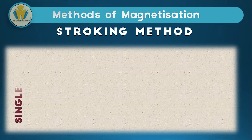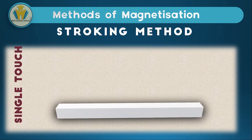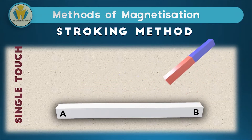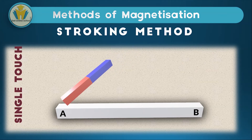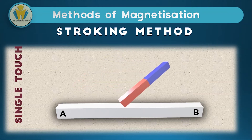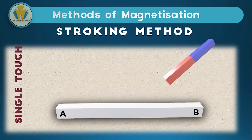The first kind is single-touch stroking. In this method, we get our magnetic material that we want to magnetize. The labels A and B show the ends where the poles will be — either a north pole or a south pole. Then we get our permanent magnet and slide it along the length, lifting it upwards and coming back to the point we started from, repeating the process several times — about 40 or 50 times.